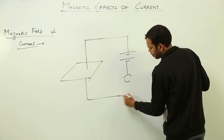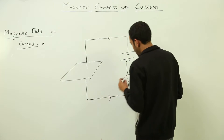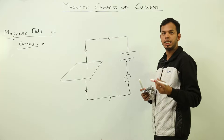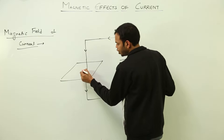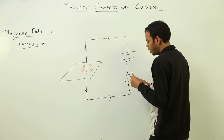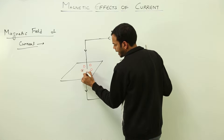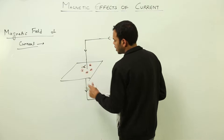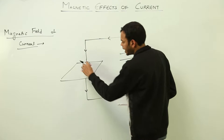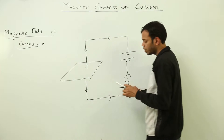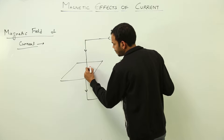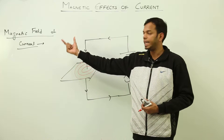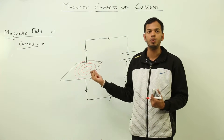The circuit was completed with cells and a switch, so current is flowing through this wire passing through the cardboard. We placed a magnetic compass at several various positions around the wire, and we saw the compass was showing directions like this — if placed all around the circle, you get an entire circular path. This proves that the magnetic field due to a current-carrying conductor exists in circular loops.